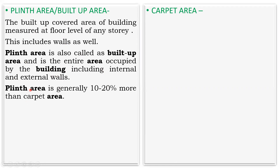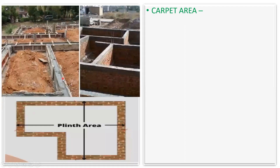Usually the plinth area is 10 to 20% more than the carpet area. Looking at how this practically appears — if you see any construction happening, this beam that has been put up is called a plinth beam.